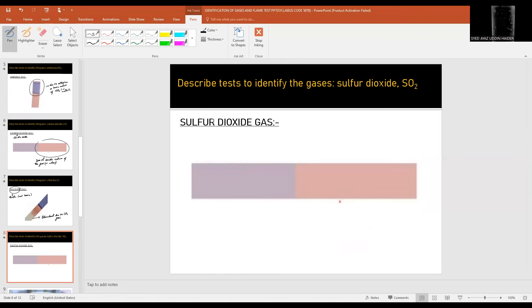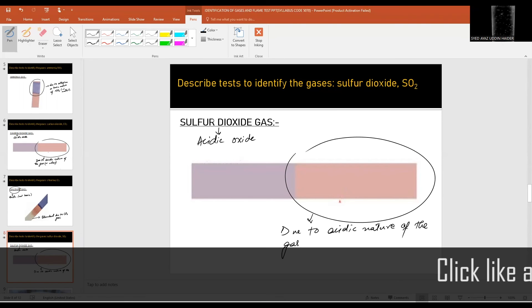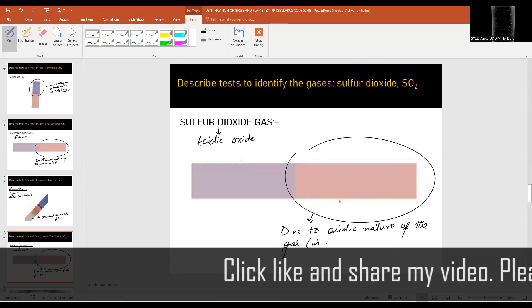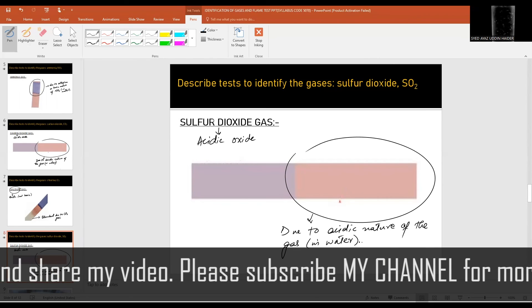Sulfur dioxide gas is an acidic oxide just like CO2. Therefore it will turn moist or damp blue litmus paper red due to the production of H positive ion in the water. This is due to the acidic nature of the gas in water.